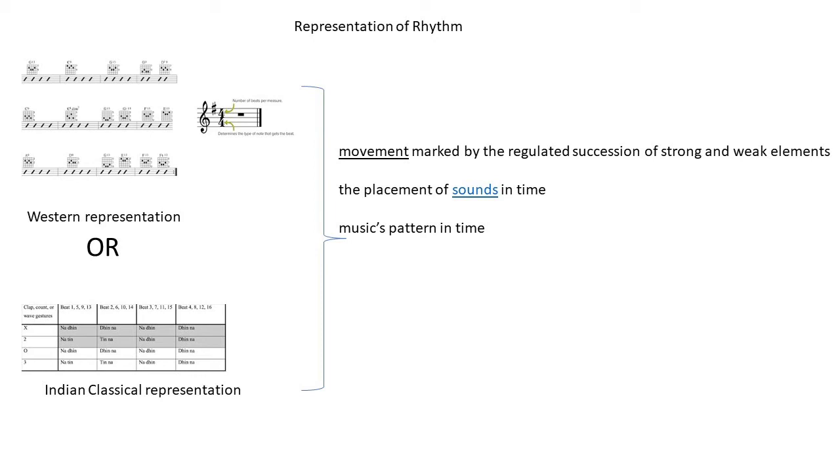In Western notation, it is noted by a time signature. As you see to your left, the time signature indicates the number of beats per measure and also the type of note. In the Indian classical notation, it is represented by the thal in Hindustani music or thalam in Carnatic music, like we say the teen thal or the Adi thalam.